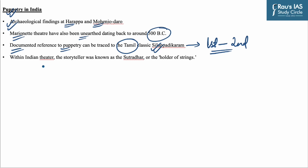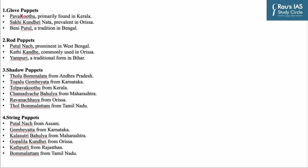Beyond its role as an art form, puppetry has carried significant philosophical importance within Indian culture. Within theatre, the storyteller was known as Sutradhar, or the holder of strings. Puppetry in India can be broadly classified into four categories. The first is glove puppets, with examples being Pavakoothu from Kerala, Sakhi Kundhei Nata from Odisha, and Beni Putul from Bengal. The second type is rod puppets, with examples including Putul Nautch prominent in West Bengal, Kathi Kundhei commonly used in Odisha, and Yampuri from Bihar.